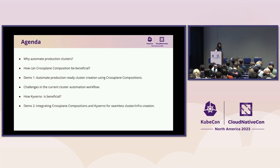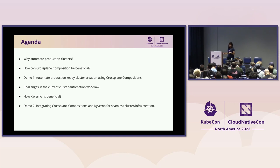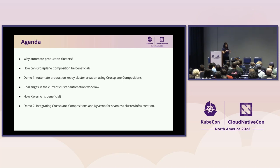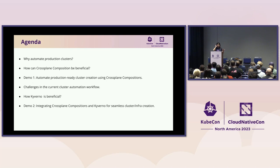Let's talk about the agenda of what this talk is all about. We'll talk about what is a production-ready cluster and why we need to automate it, what the workflow looks like with Crossplane composition, how Crossplane composition can help you automate all of this. I'll give you a quick demo of the entire workflow, then talk about the challenges in the current workflow, where Kyverno comes into the picture, and give the same demo with Crossplane composition and Kyverno together.